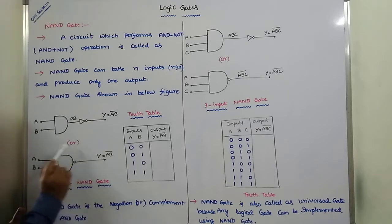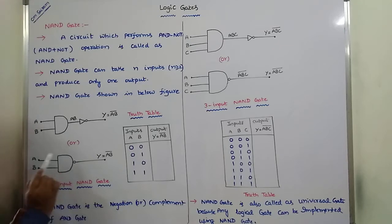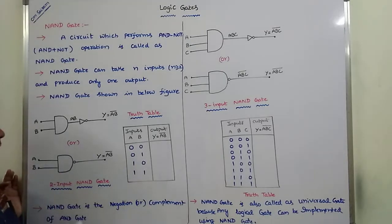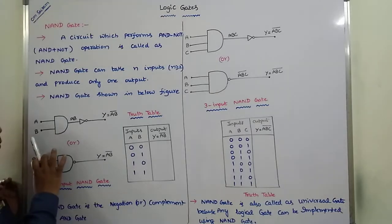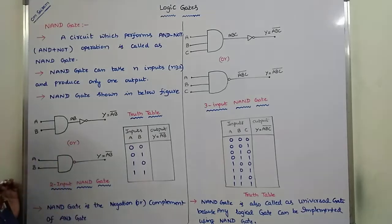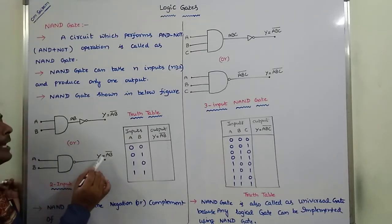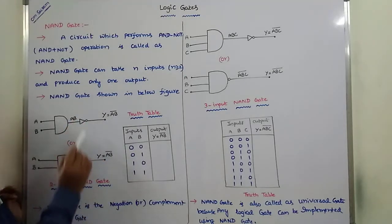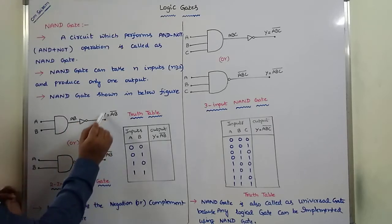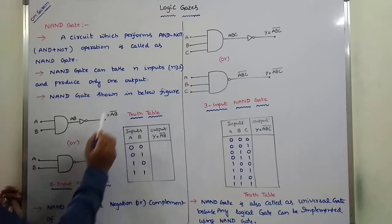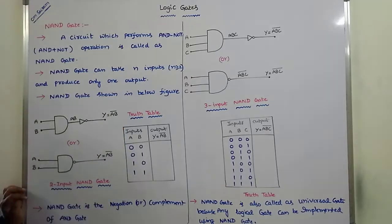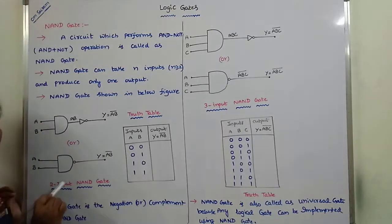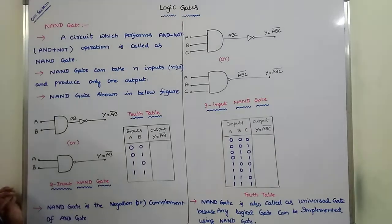Another representation of the NAND gate uses an AND gate plus a bubble symbol, where the bubble represents the NOT gate. A and B are two inputs applied to the NAND gate, and we get the output Y = AB̄. From both representations, we get the same output Y = AB̄. Since it takes two inputs, this is called a two-input NAND gate.